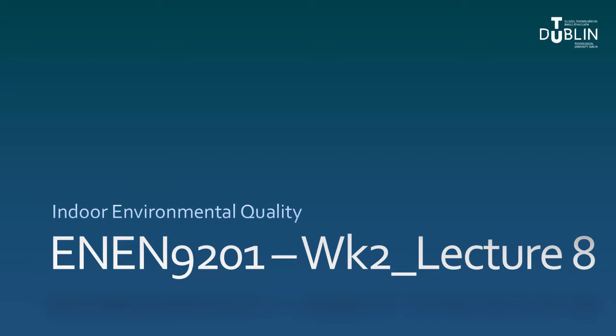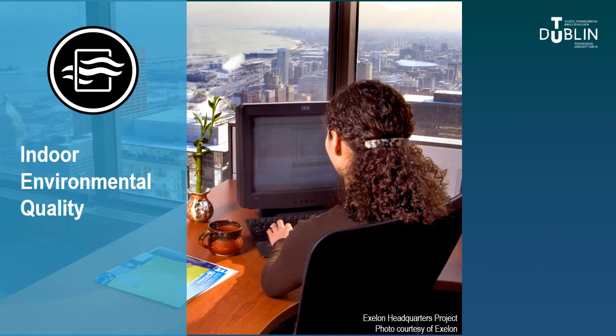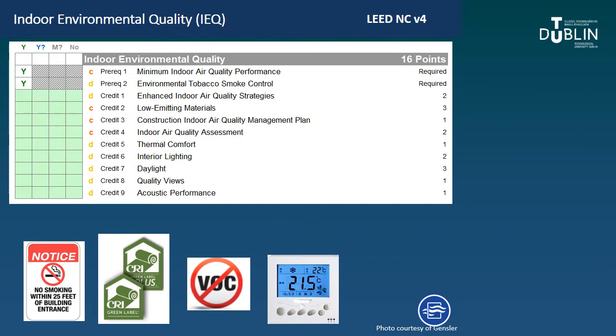Lecture eight looks at Indoor Environmental Quality. This category is related to occupant health and comfort, covering air quality, ventilation, thermal comfort, access to daylight, views, and acoustic design — basically anything that increases the quality of the indoor environment and occupant health and well-being. That translates into nine credits with two prerequisites, giving you 16 points.